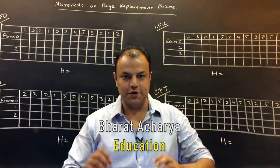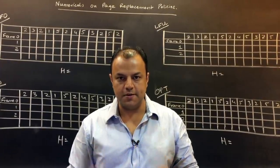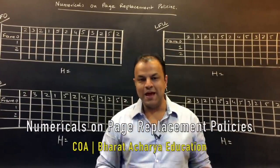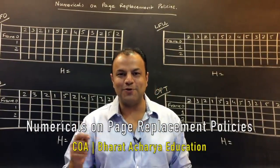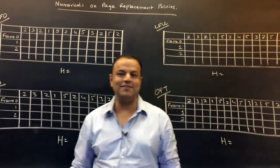So in today's video, we're going to learn numericals on page replacement algorithms. Now these are 10 mark questions that come in the exam. I call them lollipops. They are jackpot questions. You've got to get 10 out of 10 hands down.